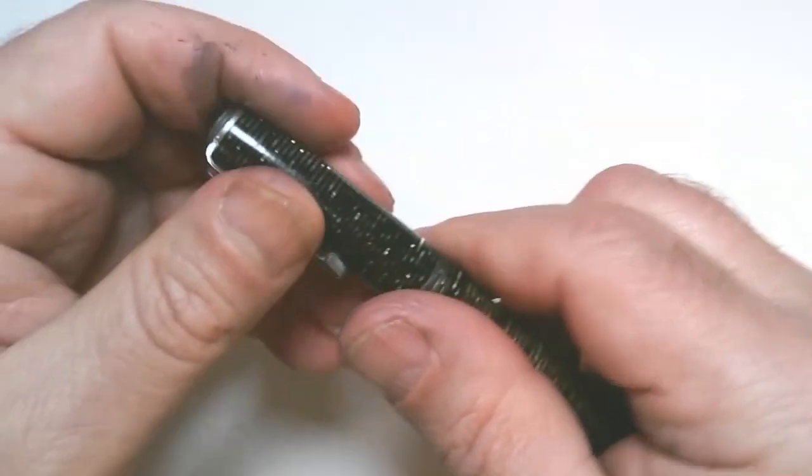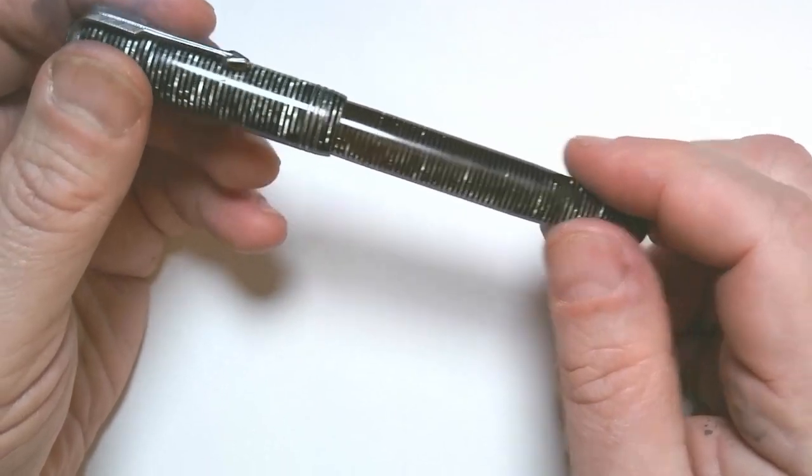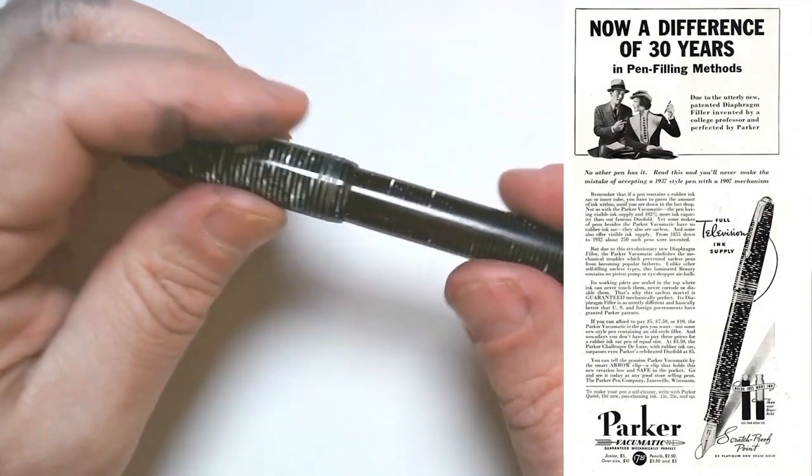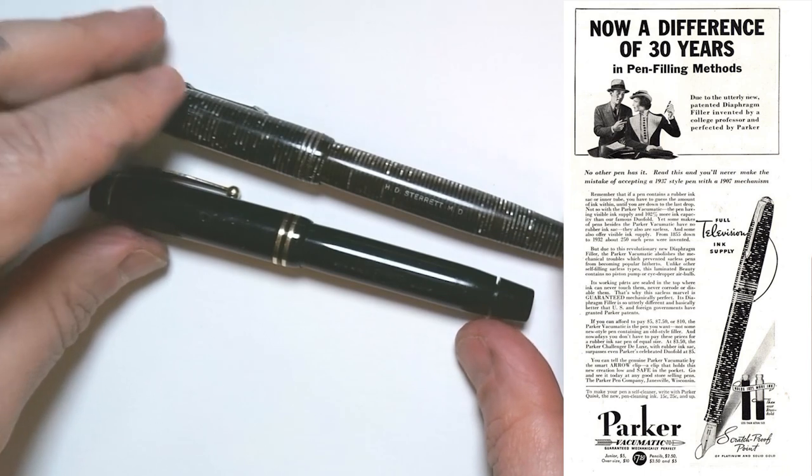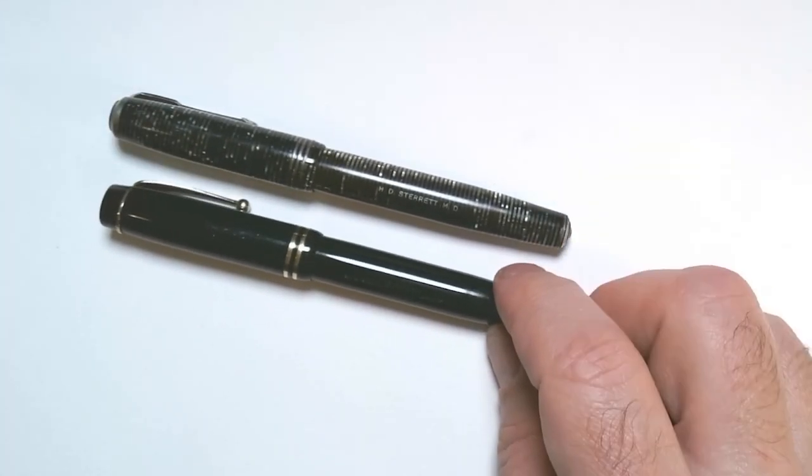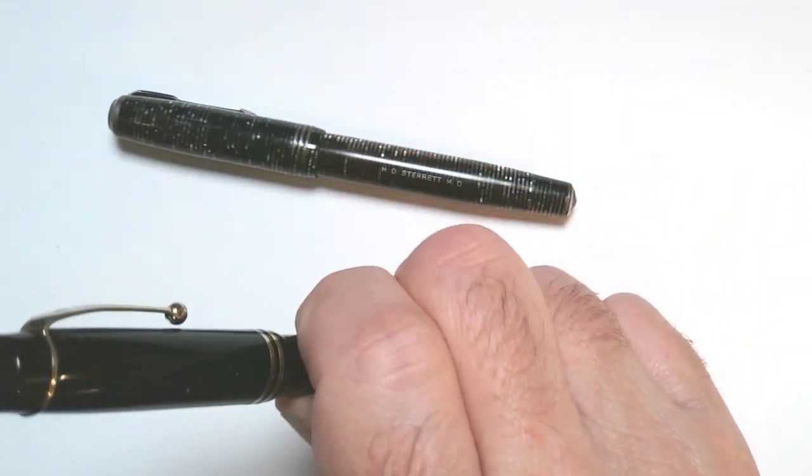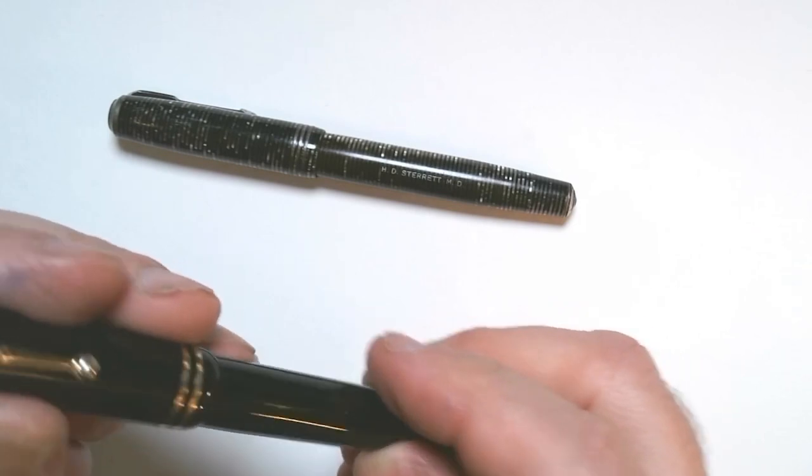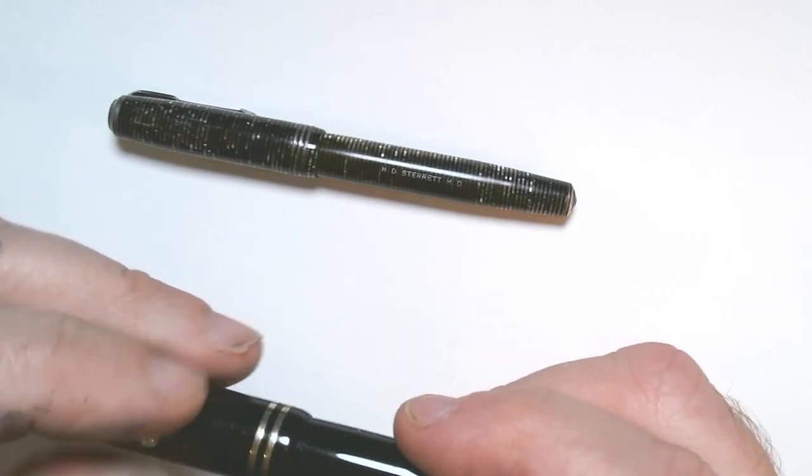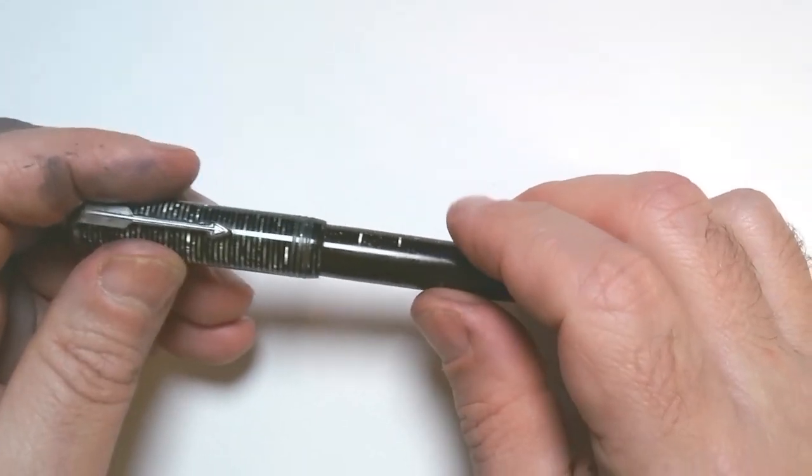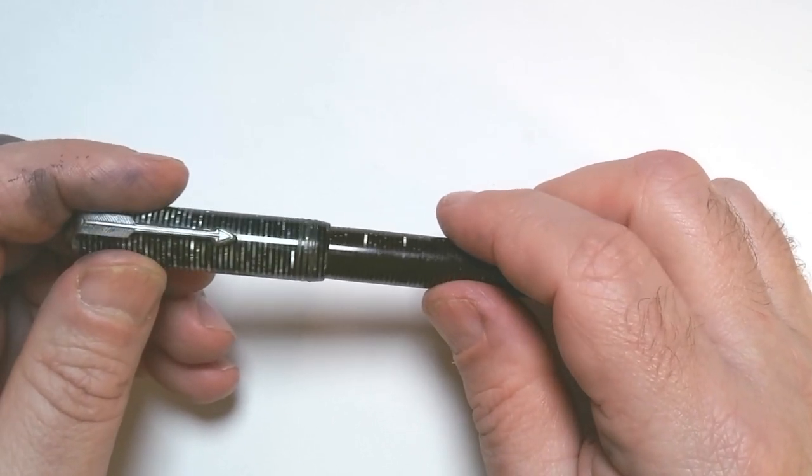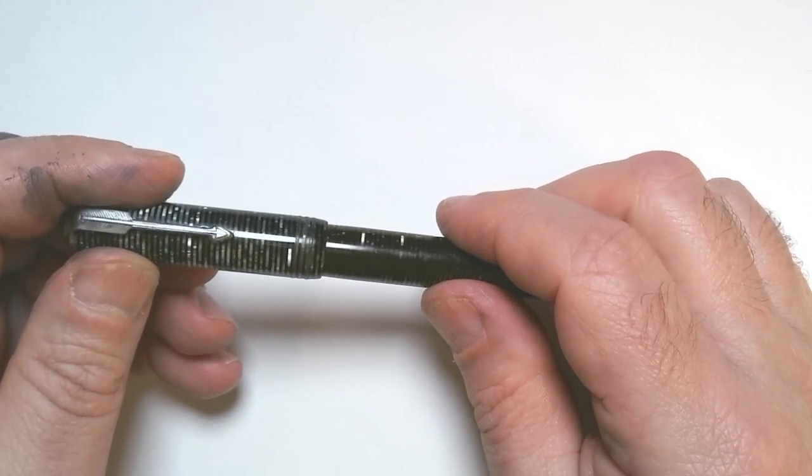Now that leads us to another Parker pen in this little collection. This is the Vacumatic pen. I love this one in plastic. It's kind of wonderful plastic with these rings and it's a little bit bigger than the Duofold. The Duofold is very simple, this model. The top and the bottom, right? Has the ball, still has the ball clip.